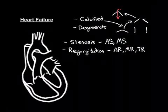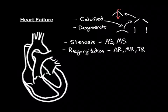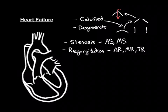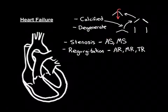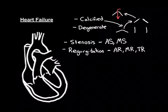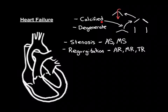Calcification of the aortic and mitral valves — the main two affected — can lead to aortic regurgitation and mitral regurgitation. So you can have both aortic stenosis and aortic regurgitation from calcification of the aortic valve. Likewise, you can have both mitral stenosis and mitral regurgitation from calcification of the mitral valve.